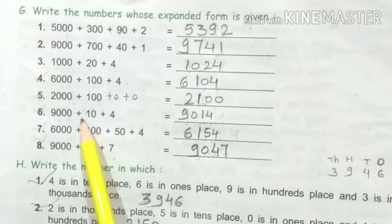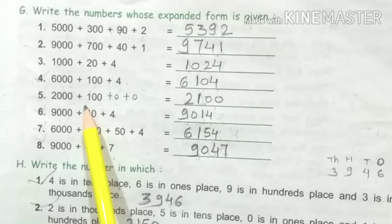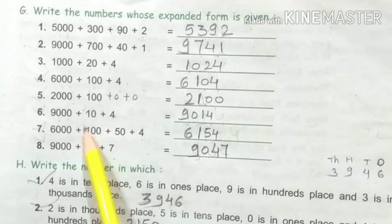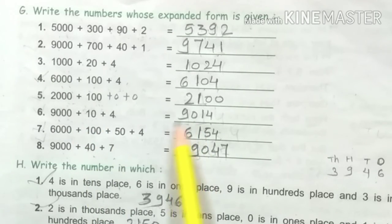9000 plus 10 plus 4. Here we have hundreds which is not showing, so we have 0 here. You can put 0: 9014.